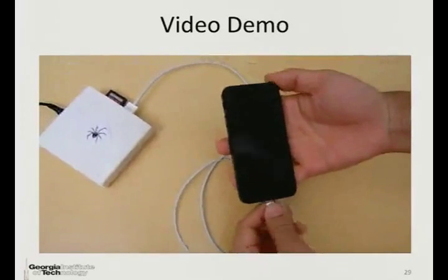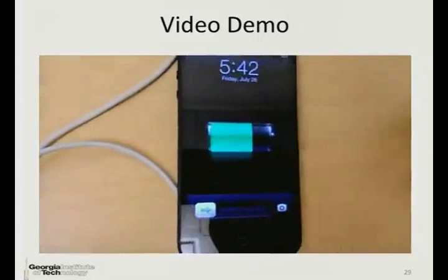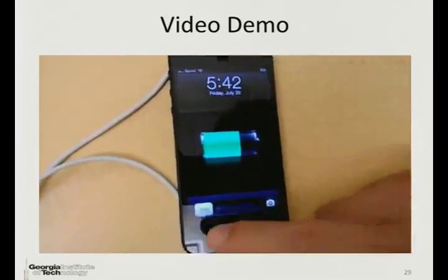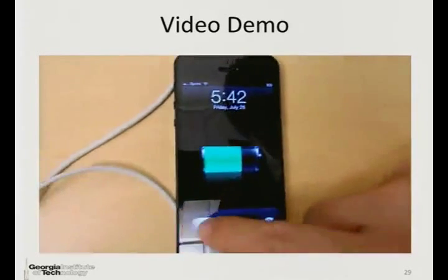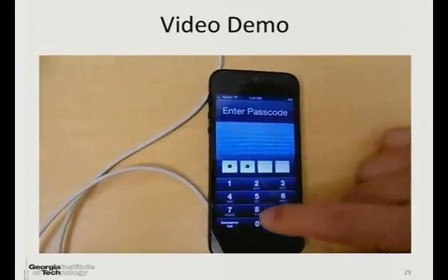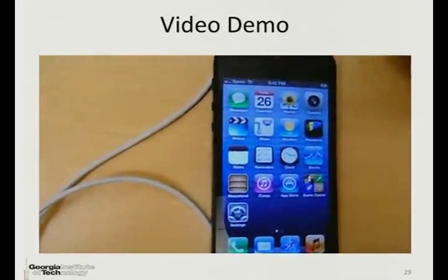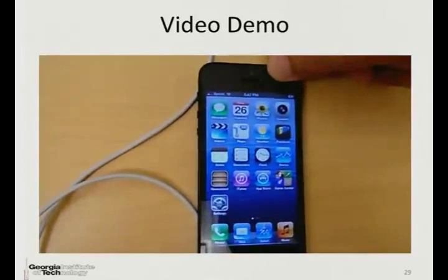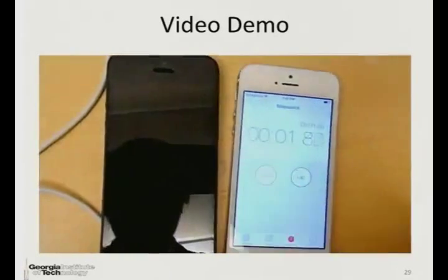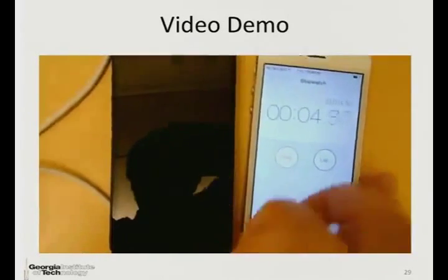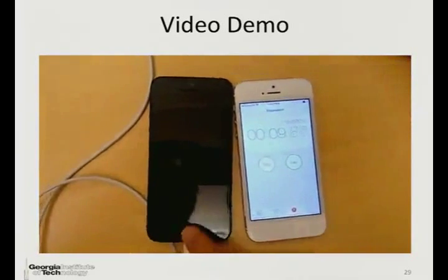Now connect with the USB cable — it is charging. At this time, the pairing cannot happen because the device is passcode locked. But if the user receives an SMS message or wants to do web surfing while charging, the user will unlock the phone. Then the MacTense attack can start at this point. Since the paired connection can be permanently available whether or not the device is locked, the MacTense attack can continuously launch even when the device is locked.